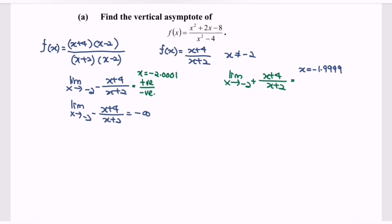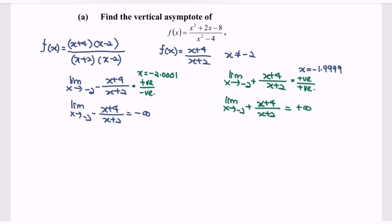If we substitute x + 4 with x = -1.9999, we will have a positive value. If we substitute x = -1.9999 into the denominator, we will also have a positive value. So the limit as x approaches -2 from the right for the function (x + 4) / (x + 2) gives positive infinity, meaning the value of y is increasing as x approaches -2 from the right.